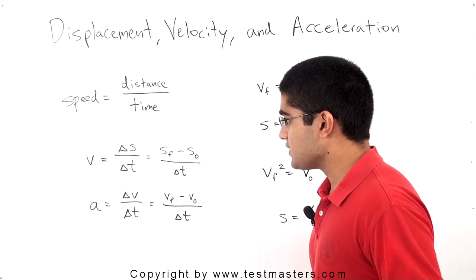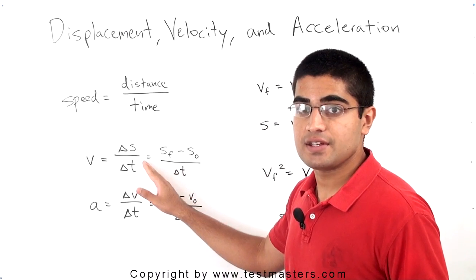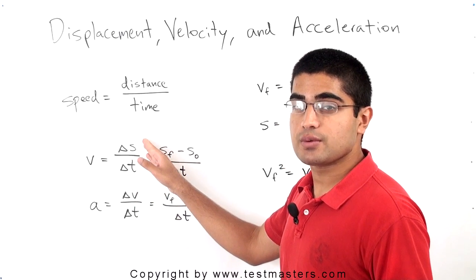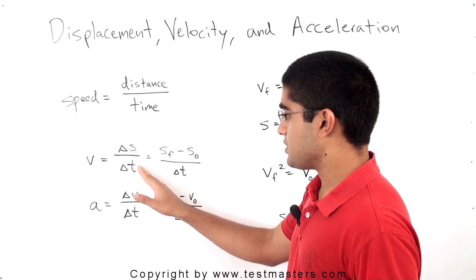The common expression for velocity looks something like this: delta S divided by delta T, where S represents distance or displacement, and T represents time.